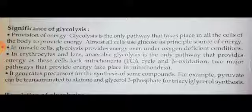In erythrocytes (red blood cells), which lack mitochondria and are non-mitochondrial cellular structures, glycolysis is the only energy source. Normal blood glucose levels are essential so that RBCs can derive energy from glucose by glycolysis — RBCs cannot utilize lipids or amino acids for energy. In the lens of the eye, anaerobic glycolysis is also the only energy pathway. Additionally, glycolysis generates precursors for synthesis of other compounds — for example, pyruvate can be transaminated to alanine, and glycerol-3-phosphate for triacylglycerol synthesis.